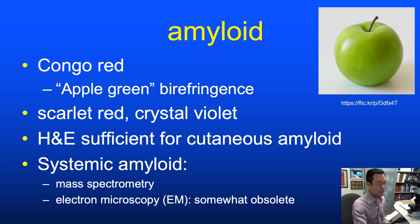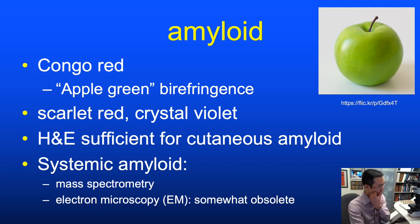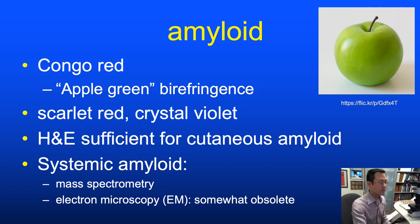With systemic amyloid, that's a different situation. After a confirmatory Congo red stain, we typically go to an ancillary diagnostic method. Electron microscopy was the historical gold standard, though not widely available now, so mass spectrometry via a sendout reference lab is the method we've been using.